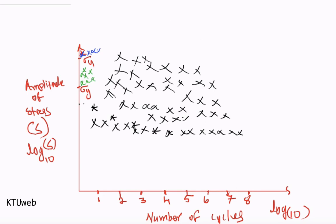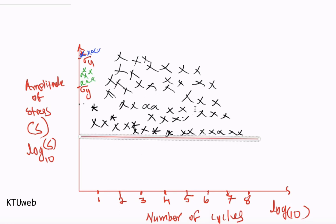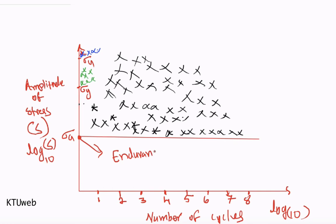This graph has a peculiarity. If you draw a line within this graph, you notice that every failure is happening above this line and there is no failure below this stress value. So this particular stress value has an important role. If you take this stress value, there is no failure below this amplitude, and this amplitude sigma a is what we call the endurance limit of this material, denoted as sigma e.